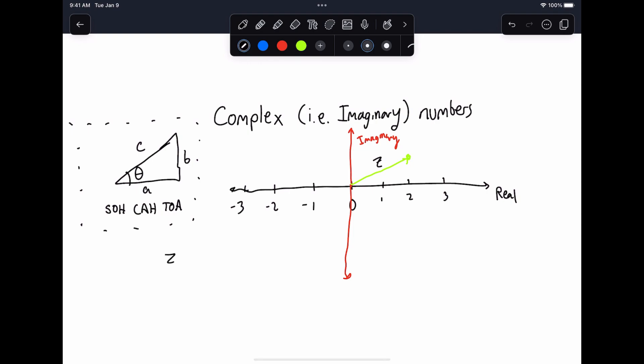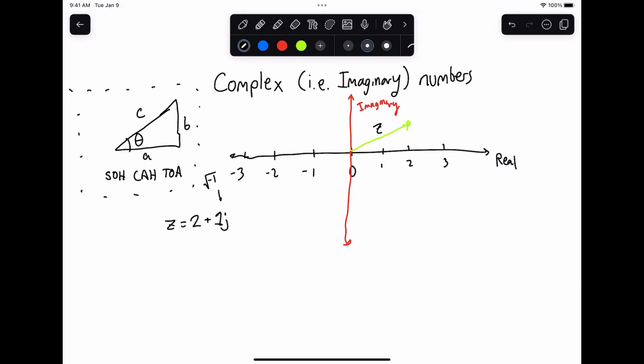usually what we do is we use the letter z to represent a number in complex space. What we say is z equals 2 in the real direction plus 1 in the imaginary direction, and what we do is we put a j here, which this is implicitly, by the way, the square root of minus 1. Some people use i, but double e's we use j. We can define a complex or imaginary number as, basically in general,